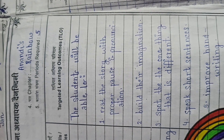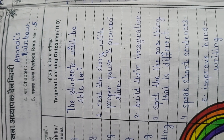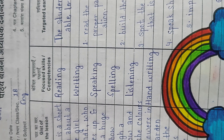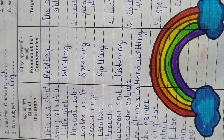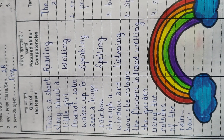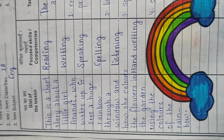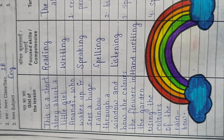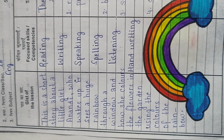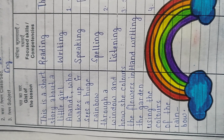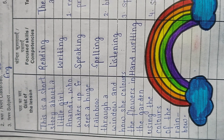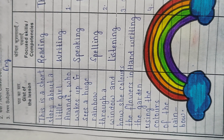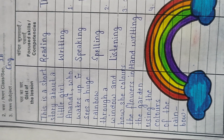Here is the lesson plan of the chapter Anandi's Rainbow of Class 1st. Subject is English. This is a short story about a little girl Anandi who wakes up and sees a huge rainbow through a window and how she colors the flowers in the garden using the colors of that rainbow.